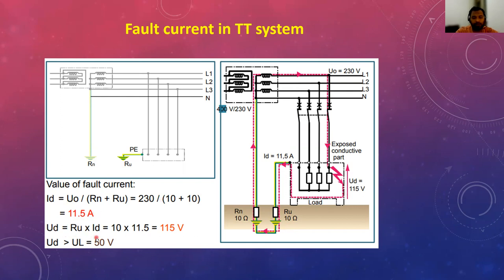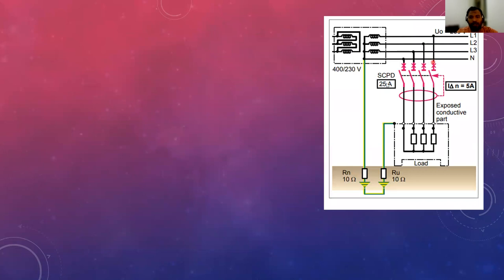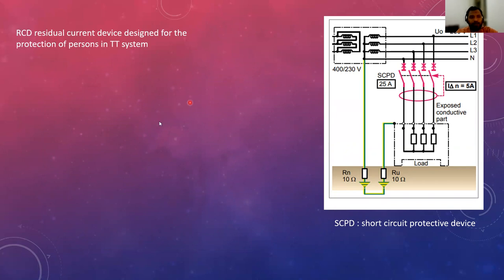The touch voltage is: fault current × resistance = 10 × 11.5 = 115 volts. This touch voltage is greater than the limit voltage of 50 volts, so when a person touches the faulted equipment they will receive a shock. To avoid this shock, we provide protection on the incomer side using an SCPD — short circuit protective device. In the TT system, we use RCDs — residual current devices.